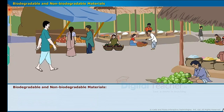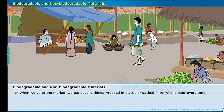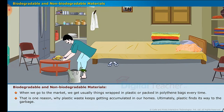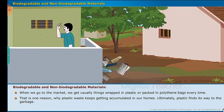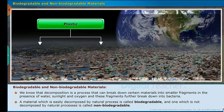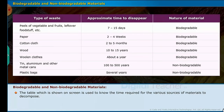Let us study biodegradable and non-biodegradable materials. When we go to the market, we get things usually wrapped in plastic or packed in polythene bags every time. That is one reason why plastic waste keeps getting accumulated in our homes and ultimately finds its way to the garbage. Decomposition is a process that can break down certain materials into smaller fragments in the presence of water, sunlight and oxygen, and these fragments further break down with the help of bacteria. A material which is easily decomposed by natural processes is called biodegradable, and one which is not decomposed by natural processes is called non-biodegradable. The table shown on screen indicates the time required for various materials to decompose.